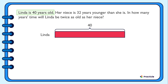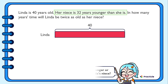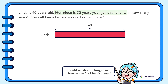Then what else are we given? We are given that her niece is 32 years younger than she is. Do you think we should draw a longer or shorter bar to represent Linda's niece's age? If you thought of drawing a shorter bar, good job!